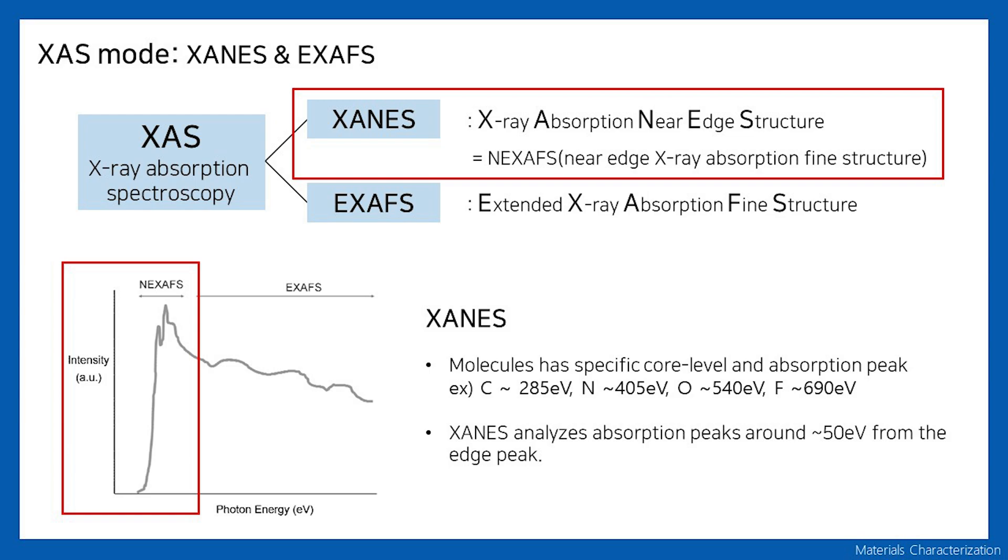XANES, like its name, is a method of analyzing about 50 eV near the absorption threshold. The binding energy of core electrons is determined mainly by molecules. Carbon mainly has a peak at 285 eV, and nitrogen mainly has a peak at 405 eV.